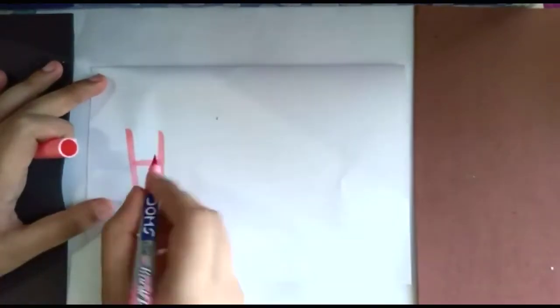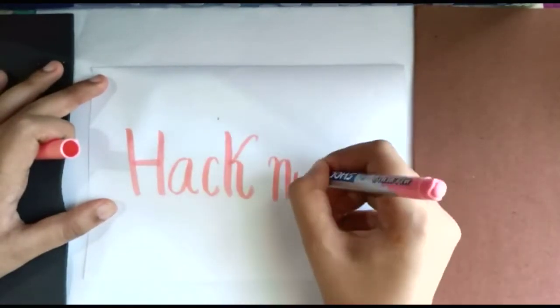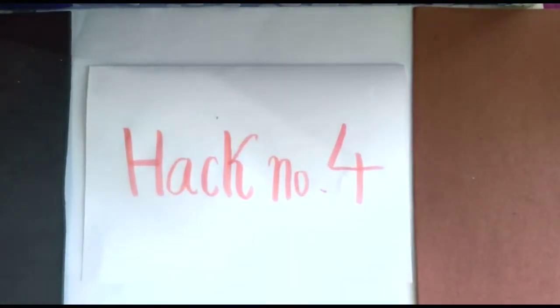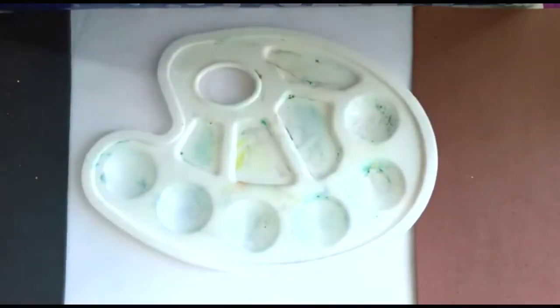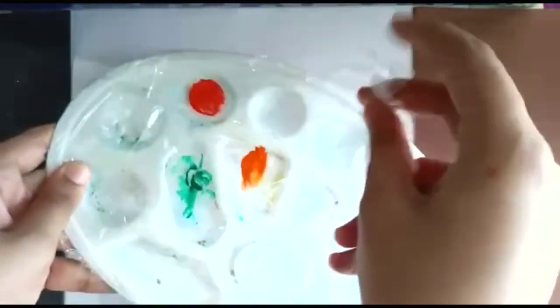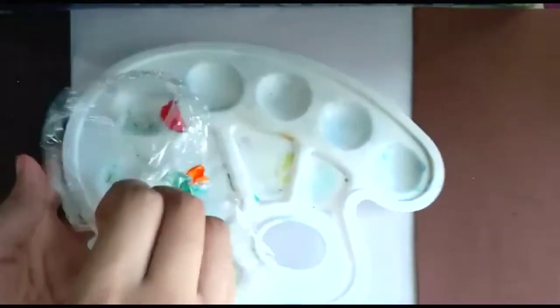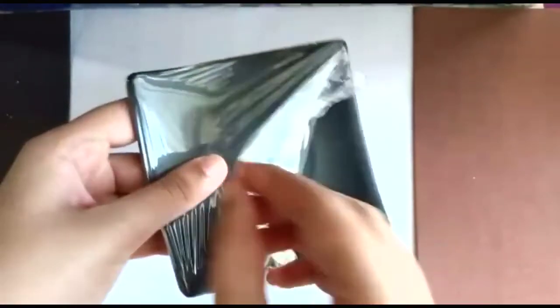Hack number four. If you have a dirty palette or you don't want to make it dirty anymore, just wrap it in a cling wrap. After you are done using it, just throw it away. This hack has helped me a lot when I am dealing with acrylic paints which are hard to remove after they're used. You can also use this on other surfaces.